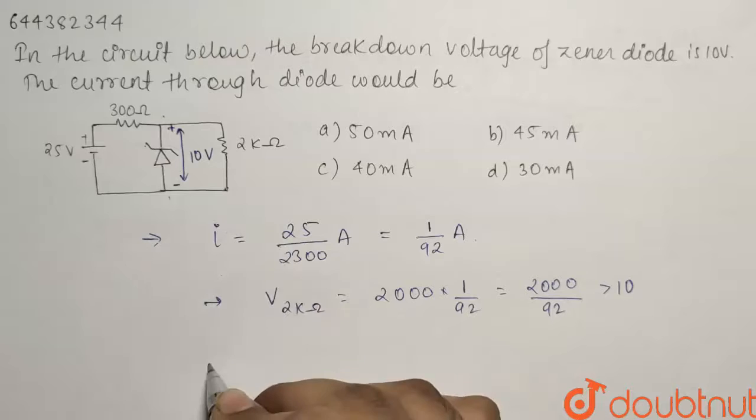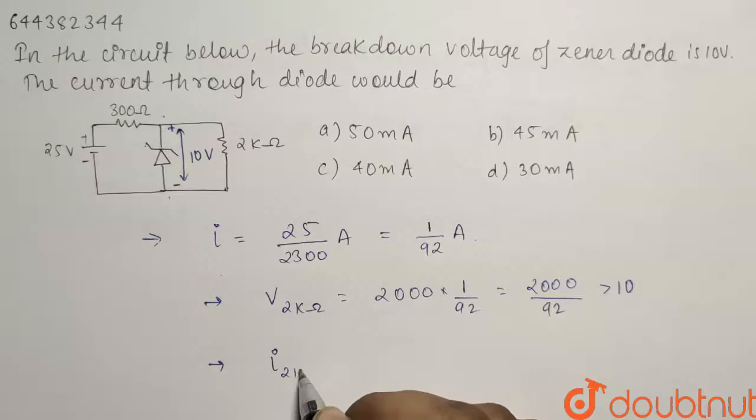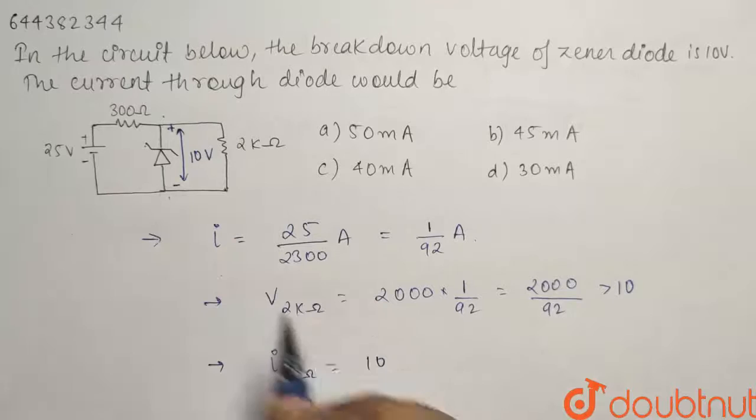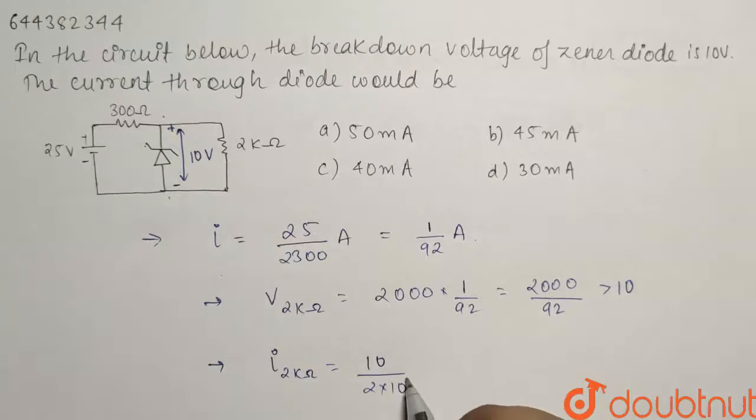So if I talk about the current in the 2 kilohm resistance, so it will be equals to I_2kΩ will be equals to the potential difference that will be equals to the Zener voltage that is 10 divided by the resistance that is 2 × 10³.